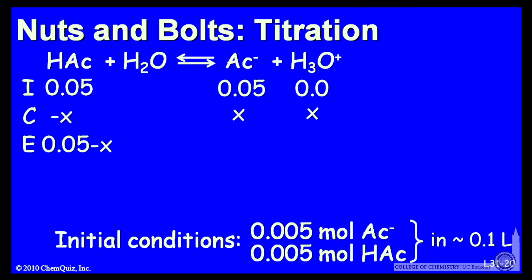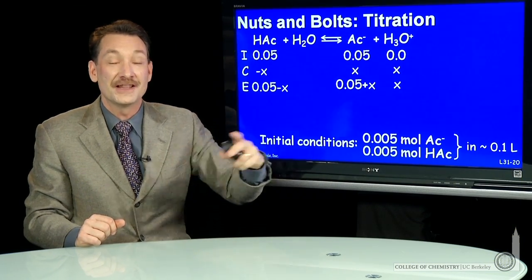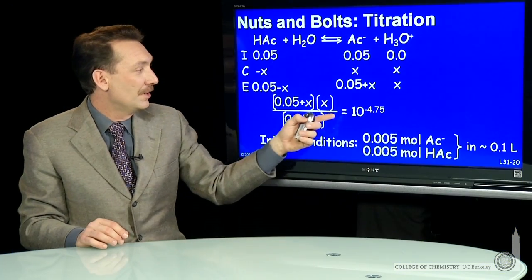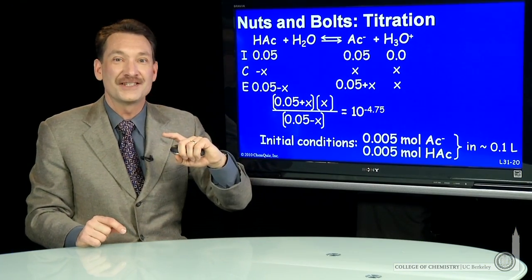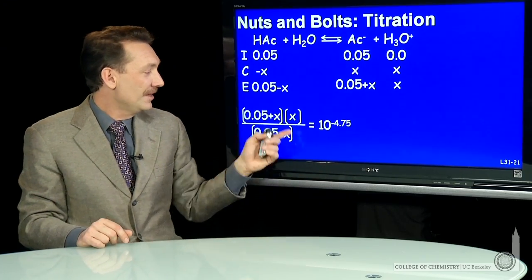So the equilibrium concentrations are 0.05 minus x, 0.05 plus x, and the H3O plus concentration x. I want to calculate that x because that's the H3O plus concentration, and that will get me the pH. So let's do that. We'll apply our equilibrium. The product concentrations, 0.05 plus x times x over the reactant concentrations, 0.05 minus x, has to equal Ka for acetic acid. So that's 10 to the minus 4.75. 4.75 is the pKa for acetic acid.